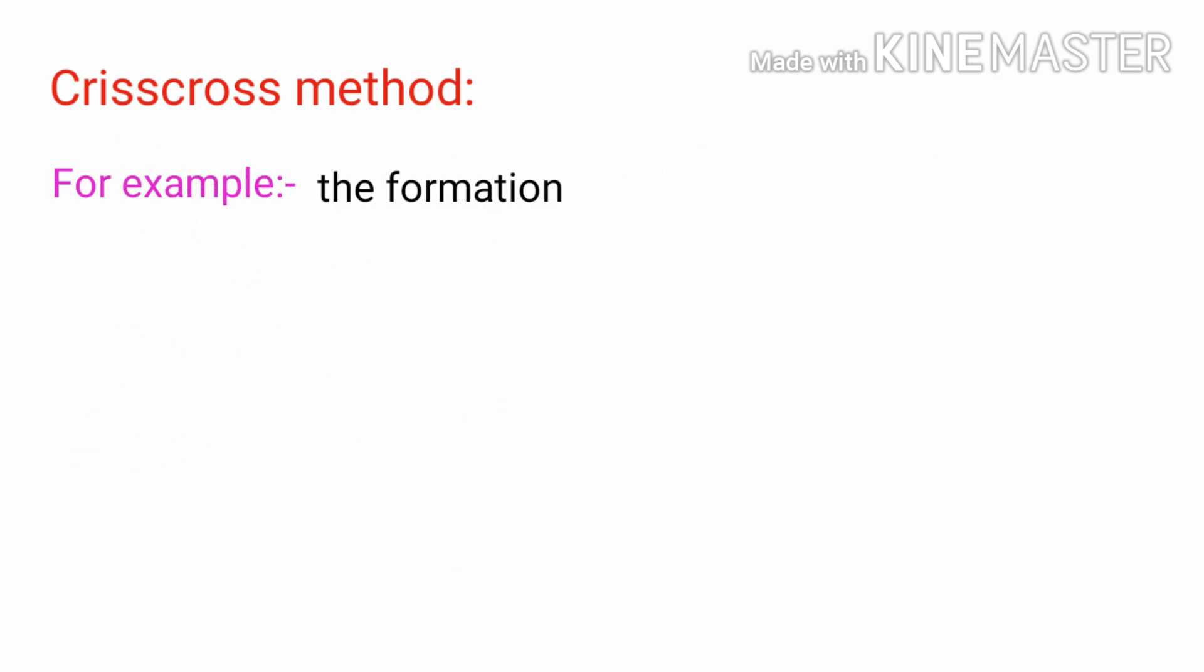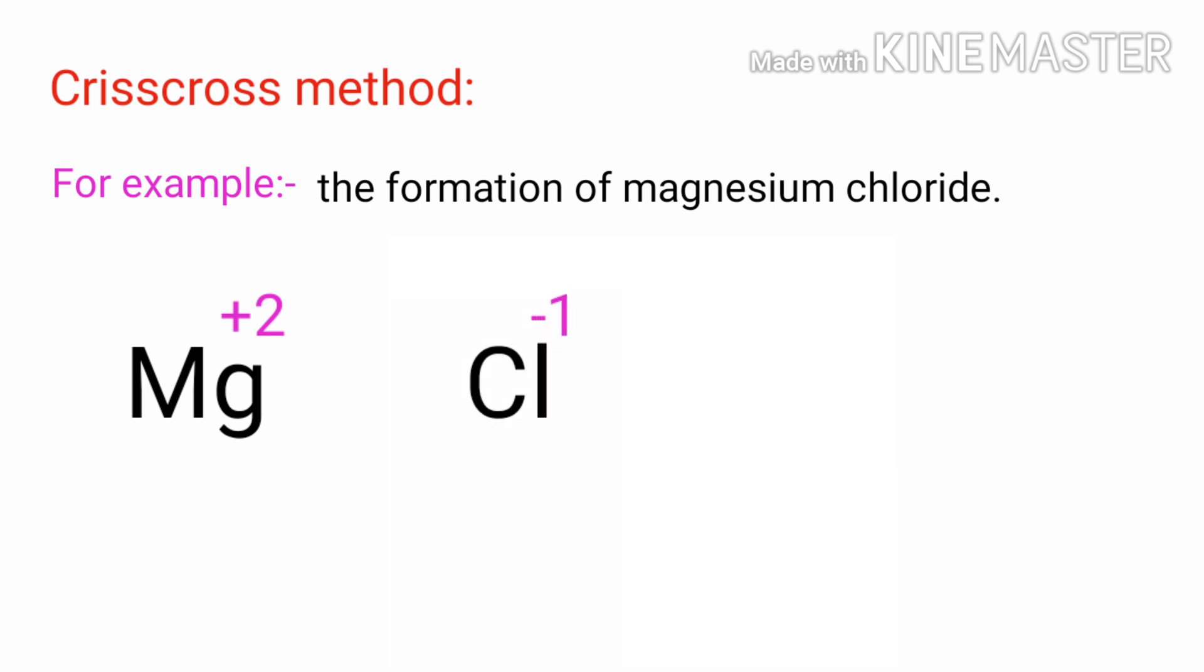For example, the formation of magnesium chloride. Magnesium is a metal and the oxidation state of magnesium ion is plus two. Chlorine is a non-metal and the oxidation state of chlorine ion is minus one.